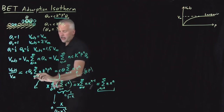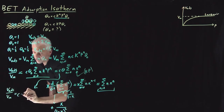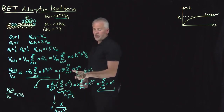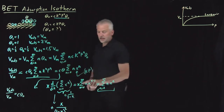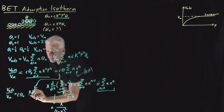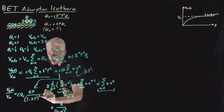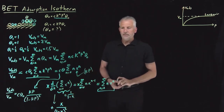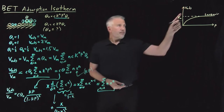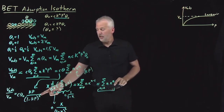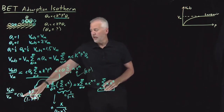Using that result, the adsorbed volume over the monolayer volume equals c times theta naught times the sum, which is now kp over 1 minus kp quantity squared. However, this is also a function of theta naught, which is unknown, so I still need to determine what theta naught is equal to.